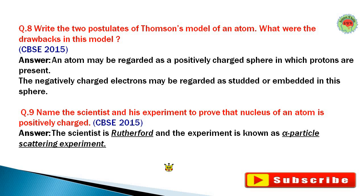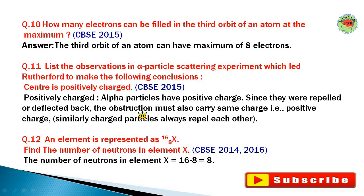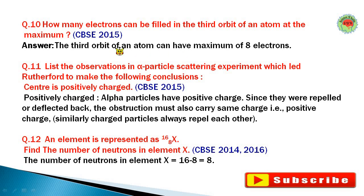Question number ten: How many electrons can be filled in the third orbit of an atom at maximum? The first shell can occupy 2 electrons, the second shell 8 electrons, and the third shell can also occupy a maximum of 8 electrons.